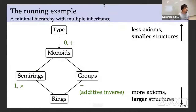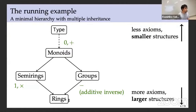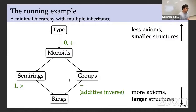The running example of this talk is a minimal hierarchy with multiple inheritance consisting of four structures: monoids, groups, semirings, and rings. Monoids and groups are additive. Monoids have two operators — addition and zero. Groups have one operator, the additive inverse. Semirings have two operators — multiplication and one. The ring structure inherits from both semirings and groups. We say structures with fewer axioms are smaller, and structures with more axioms are larger. So the monoid structure is the smallest and the ring structure is the largest.